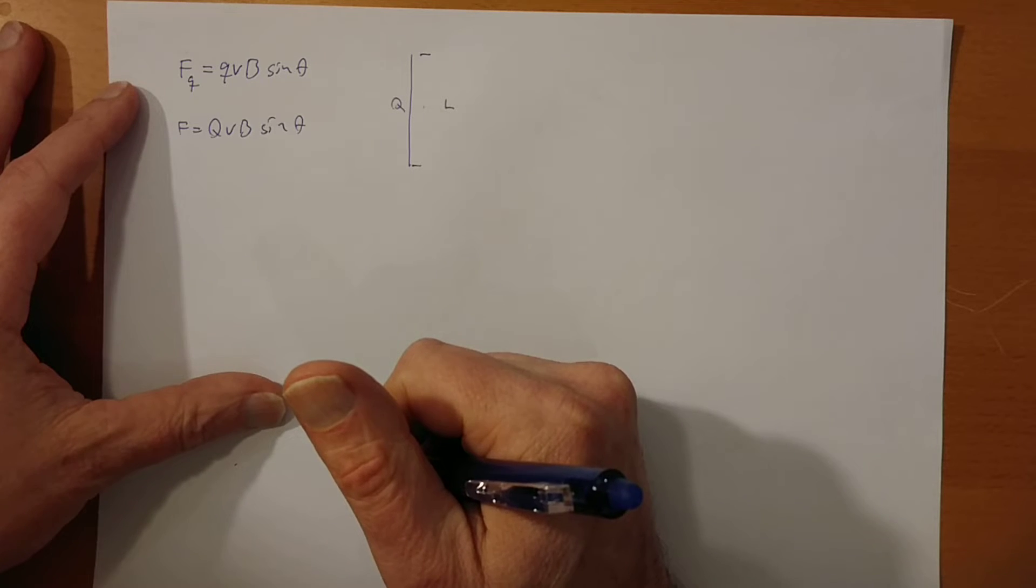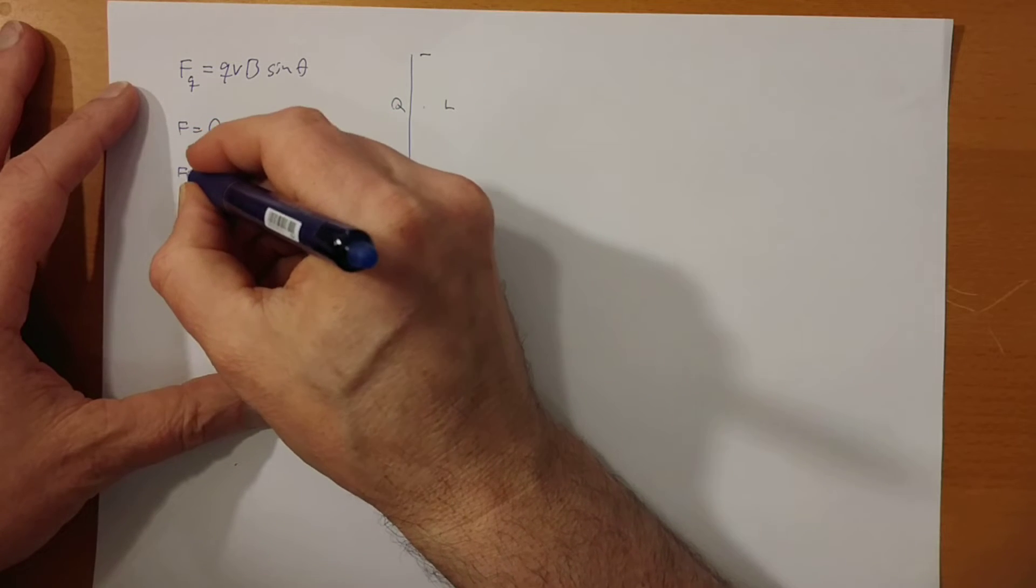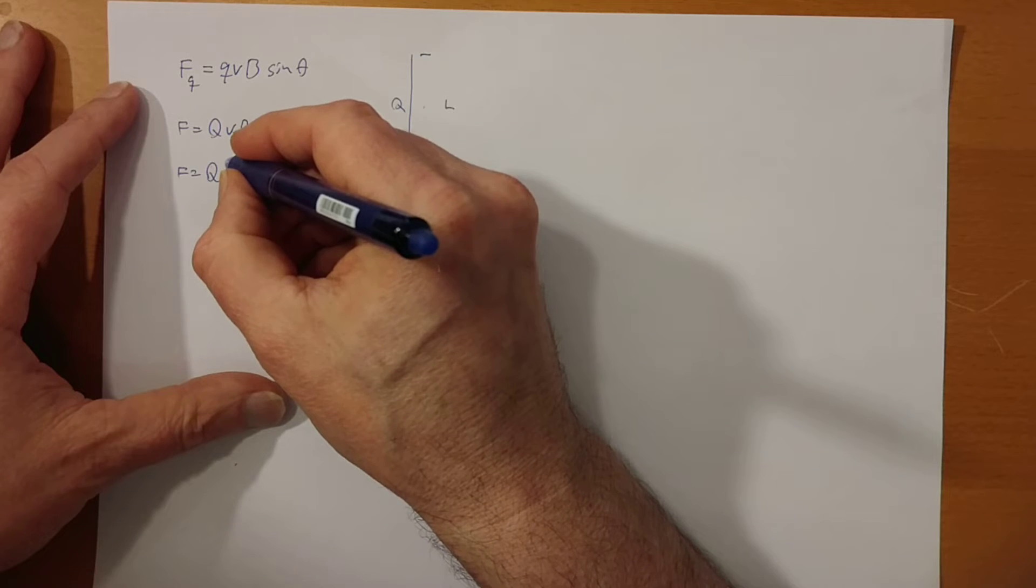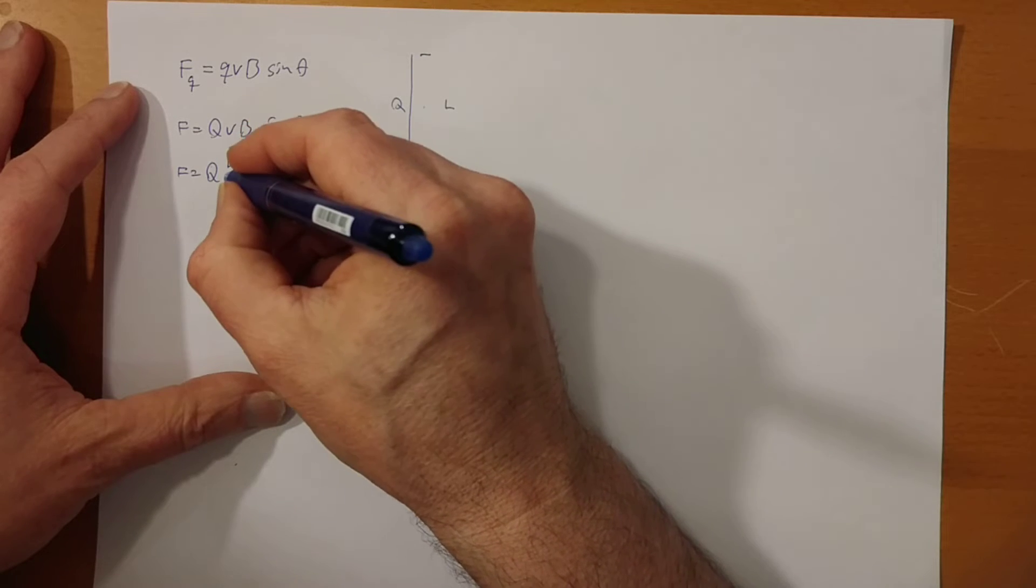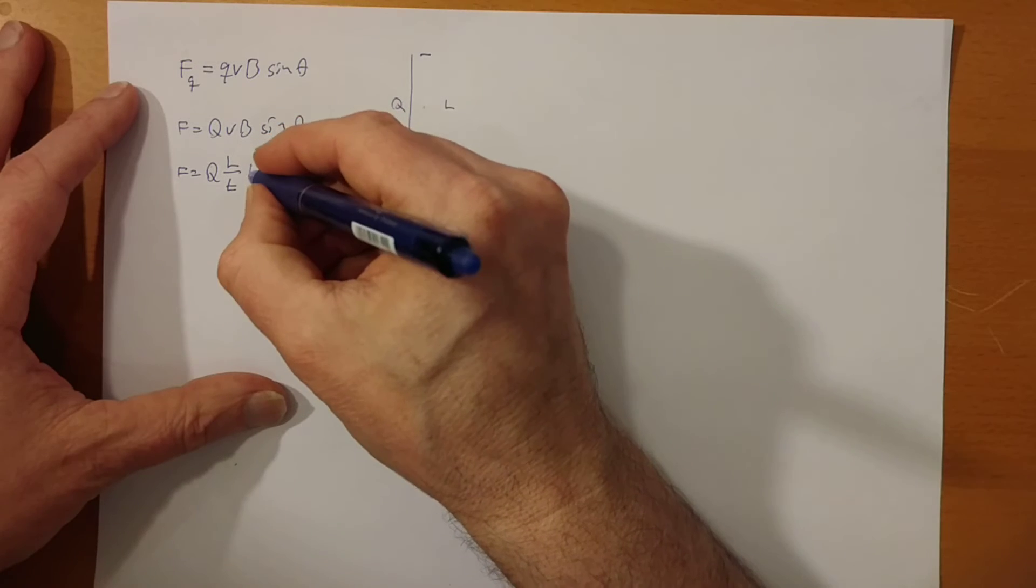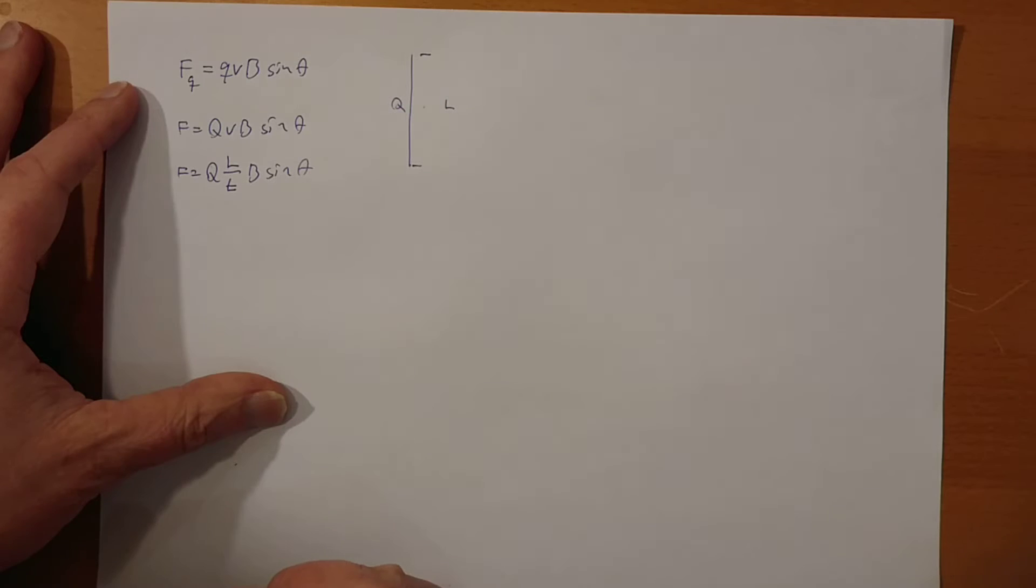Now, we can split velocity into force equals charge times the length divided by the time it takes for the charges to go that length, times B sin theta. Right?